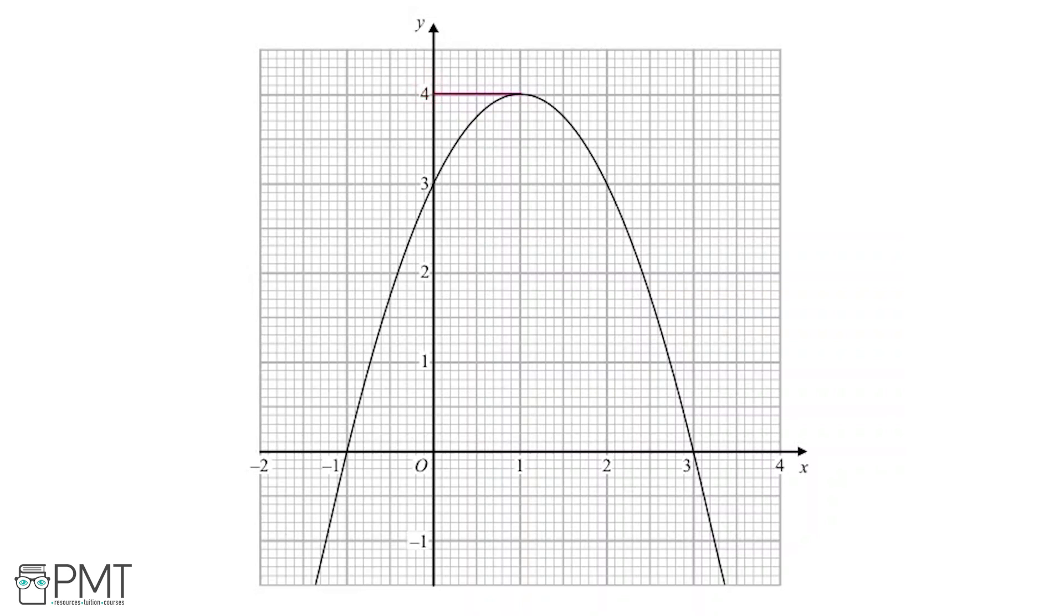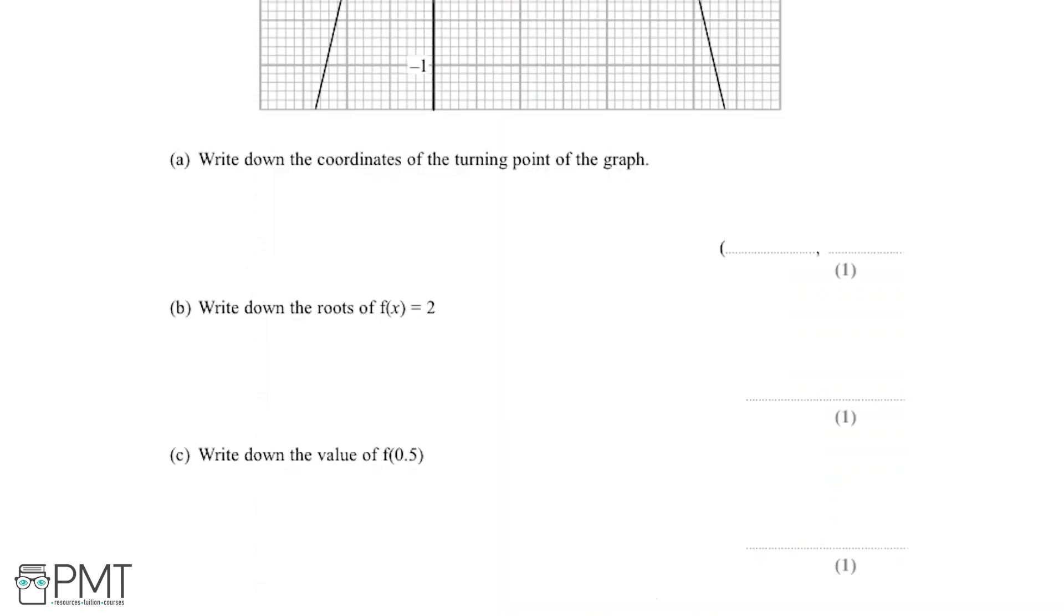Now we need to look at the x-axis. If we go down here, we can see that's x equals 1. So the coordinates of the turning point is (1, 4), because x equals 1 and y equals 4.